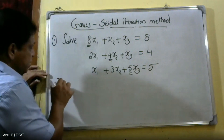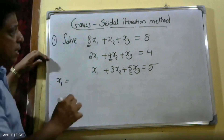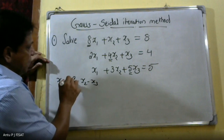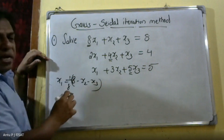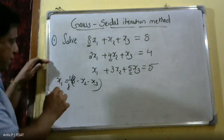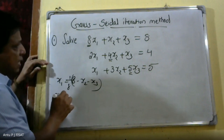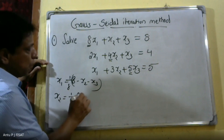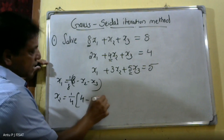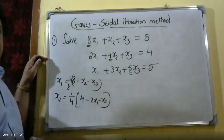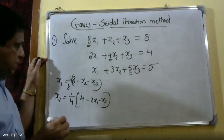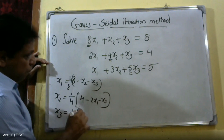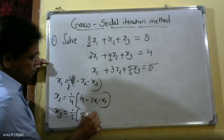From the first equation, x1 equals (1/8) times (8 minus x2 minus x3). From the second equation, x2 equals (1/4) times (4 minus 2x1 minus x3). From the third equation, x3 equals (1/5) times (5 minus x1 minus 3x2).